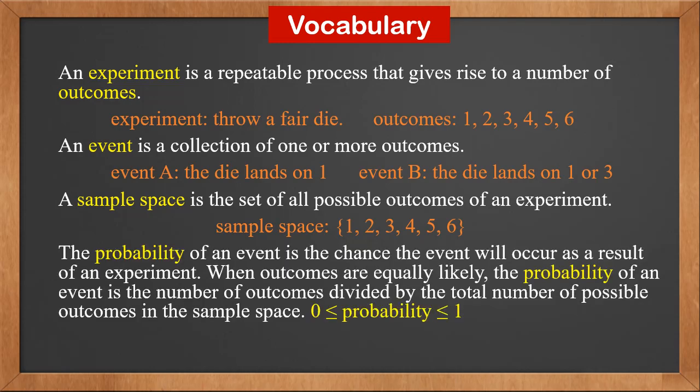The probability of an event is the chance the event will occur as a result of an experiment. When outcomes are equally likely, the probability of an event is the number of outcomes divided by the total number of possible outcomes in the sample space. Probability is always between 0 and 1.